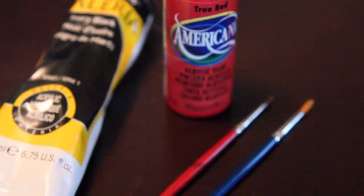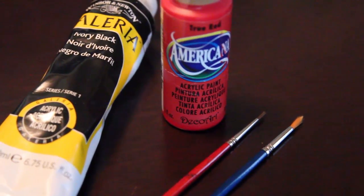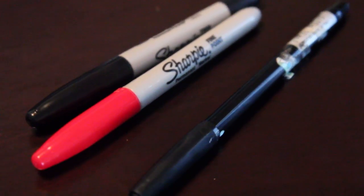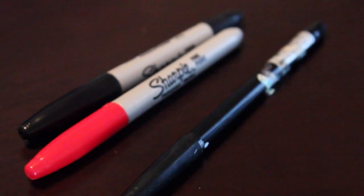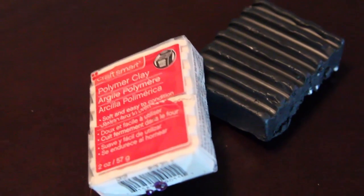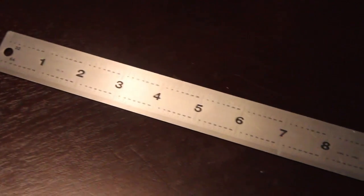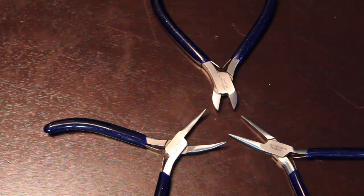Also, red and black paint with some paint brushes, or you can use black and red sharpie markers, white and black polymer clay, a roller, some sort of glue, and wire cutters and pliers.